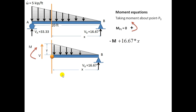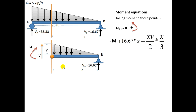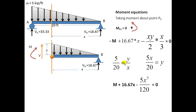For the UVL, the force is (X·Y)/2 and the moment arm about point P is X/3. This creates a clockwise moment — taken as negative. Setting the sum equal to zero and finding Y by the same slope method as before gives the bending moment equation for this UVL.